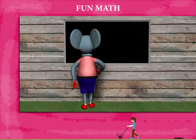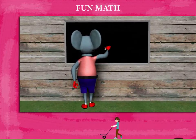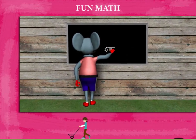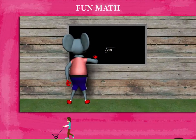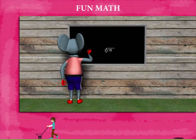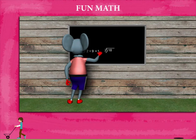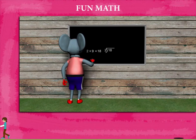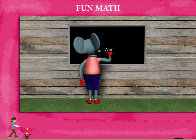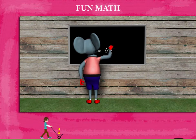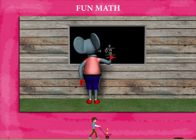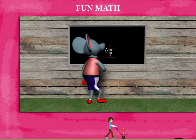He writes 18 divided by 2. He remembers the tables and writes two 9's are 18. He gets the answer. So, he writes 18 in the division question and writes 9 as the quotient. Subtracts and gets 0.